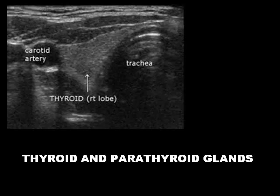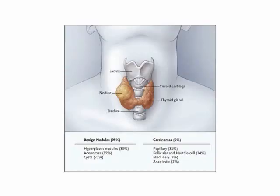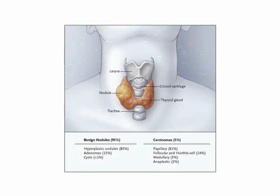Thyroid and parathyroid glands. The thyroid gland is a very important organ in ultrasound — not only for nodules and cancer, but also for other diseases like hyperthyroidism, hypothyroidism, and Hashimoto's disease, which are very important in thyroid scanning for sonographers.